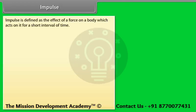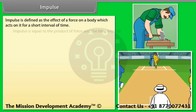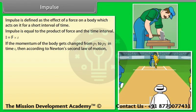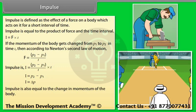Impulse is defined as the effect of a force on a body which acts on it for a short interval of time. Impulse = force × time interval: I = F × T. If the momentum of a body changes from P1 to P2 in time T, then by Newton's second law, impulse I = P2 − P1 = ΔP. Impulse is also equal to the change in momentum of the body. It is a vector quantity and its direction is the same as that of the change in momentum.